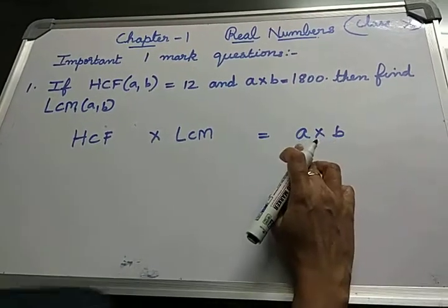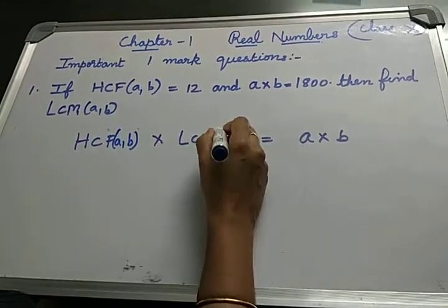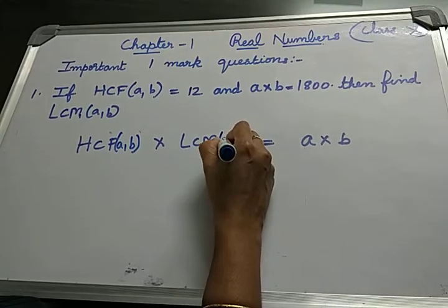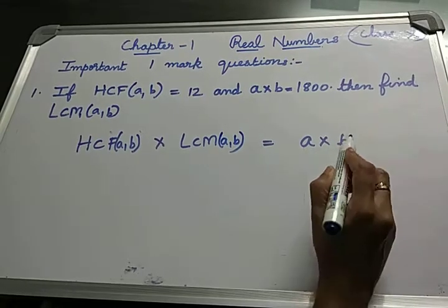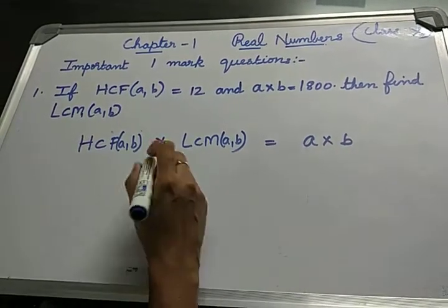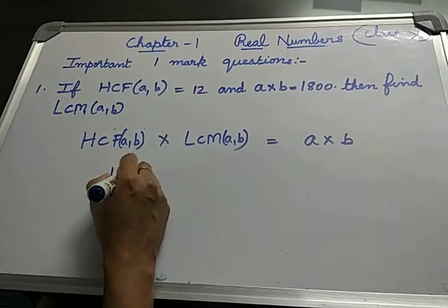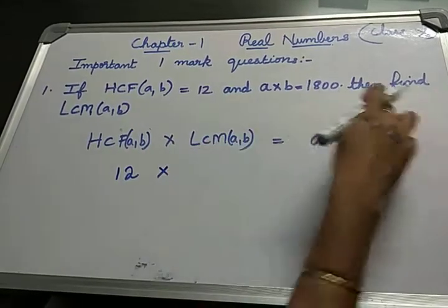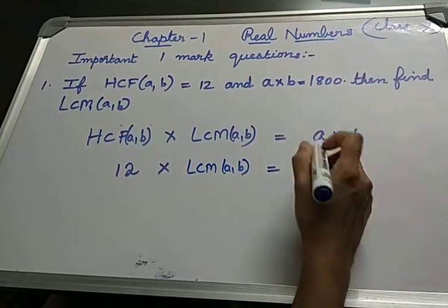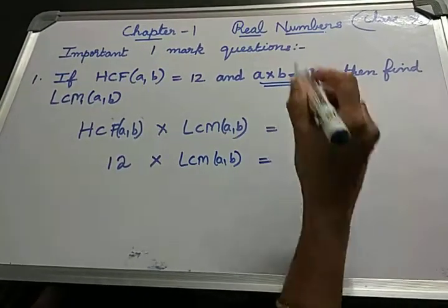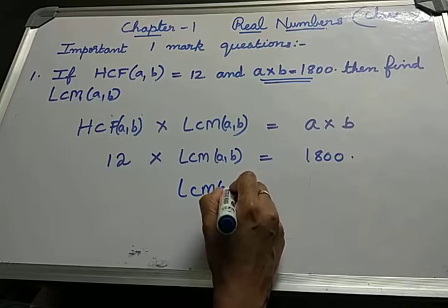Here the numbers are A and B. So HCF of two numbers A and B into LCM of two numbers A and B is nothing but A into B. In the data they have given HCF of two numbers is 12. So substitute in place of HCF. We have to find LCM of A and B. A into B is given as 1800.